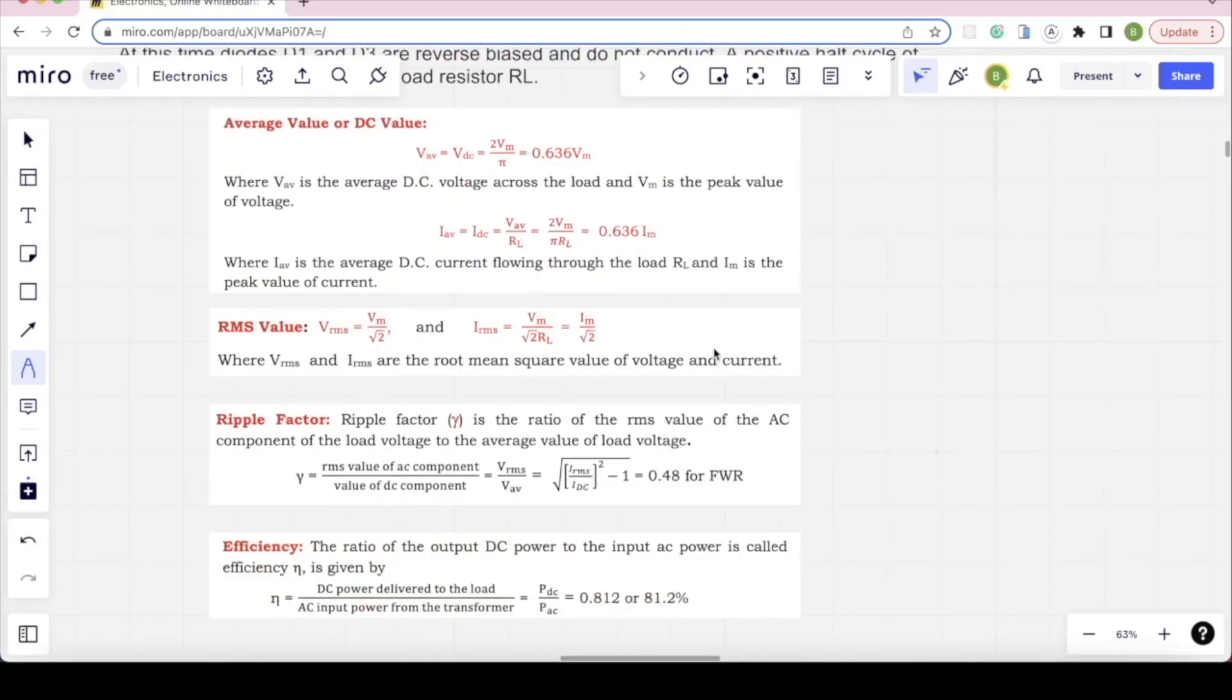For half wave rectifier, average value, RMS value, ripple factor, efficiency are given. For full wave, output is double. VDC is 2VM by Pi. Half wave value is VM by Pi.